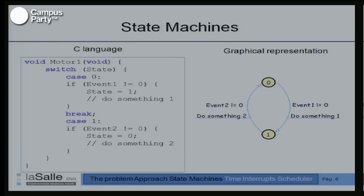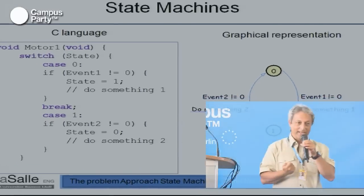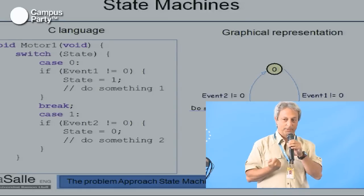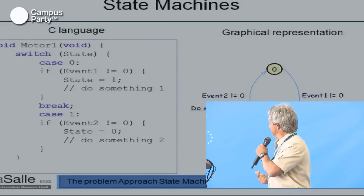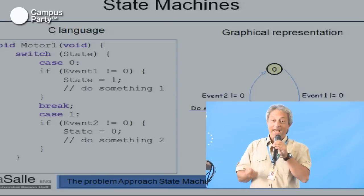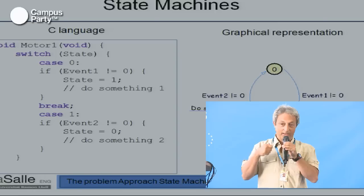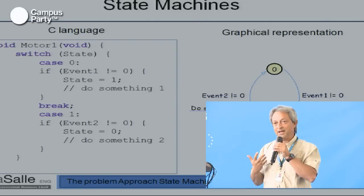The transition from state 0 to state 1 occurs when the event_one variable is not zero. This is the condition for changing state. When we change, we execute. The main operation of a motor is evaluating a condition — just evaluating a condition and executing something when the condition occurs.